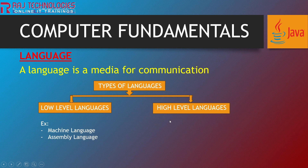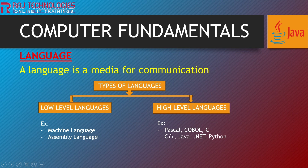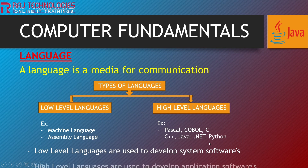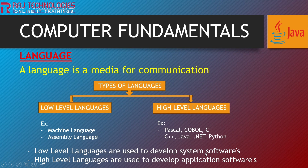The next type of languages are high-level languages. These are English-type languages — very easy to write the code, very easy to read, very easy to understand. The examples of high-level languages are Pascal, COBOL, C, C++, Java, .NET, and Python. These are some of the example programming languages which are high-level. Low-level languages are used to develop system softwares, and by using high-level languages we develop application softwares.